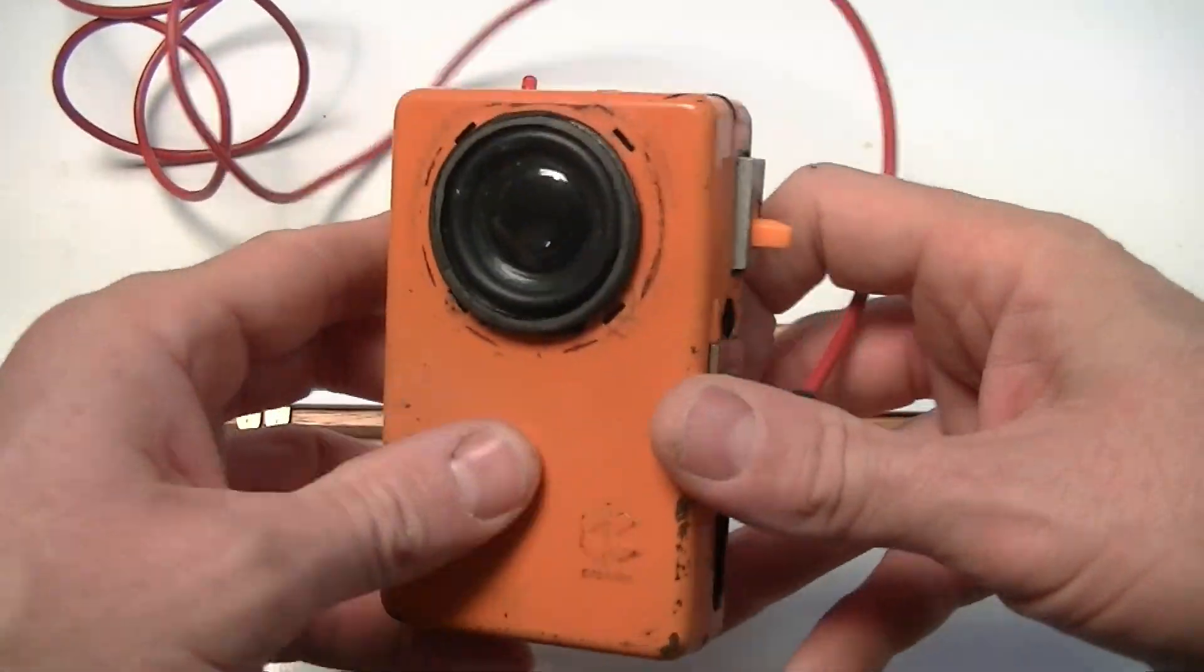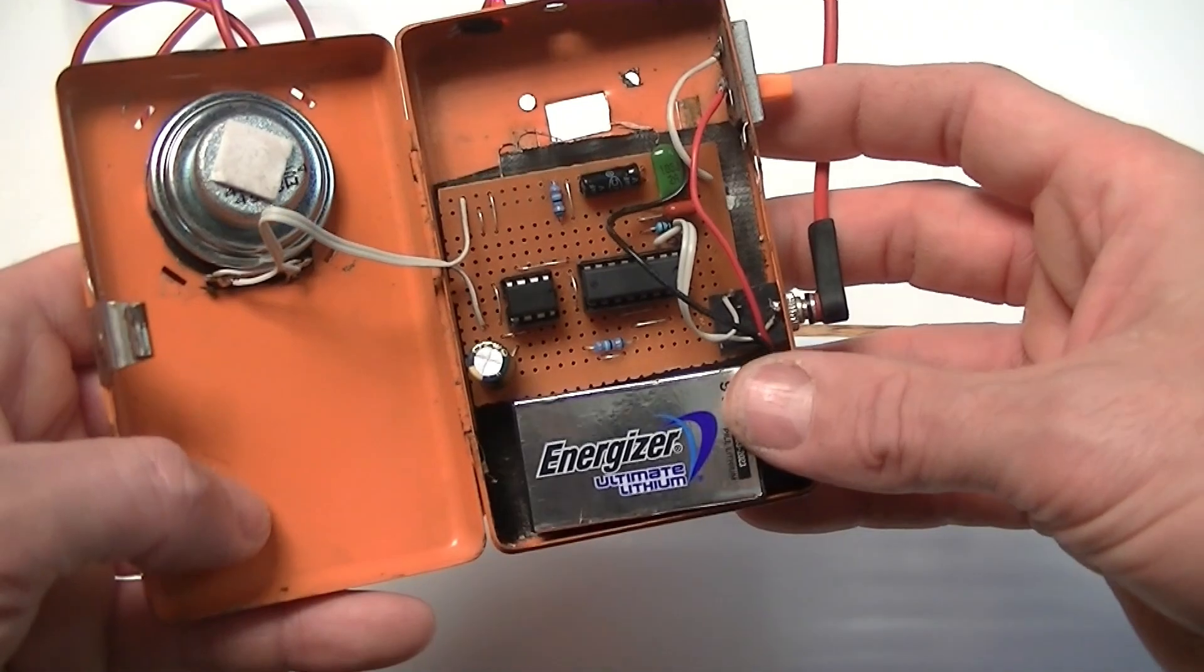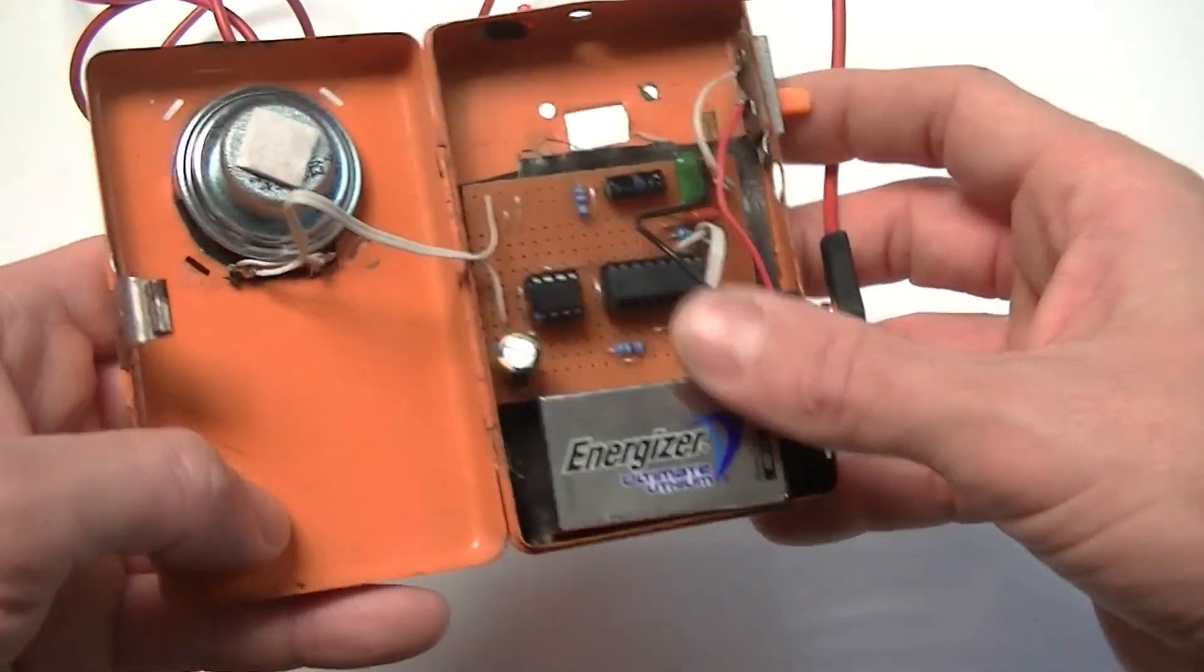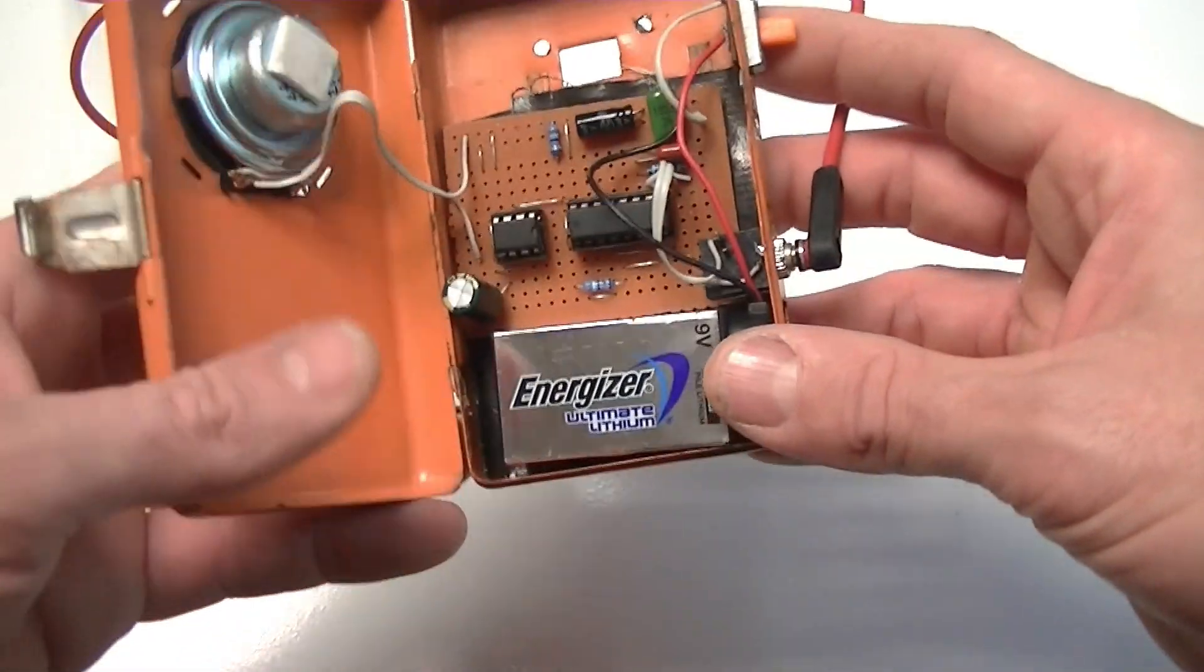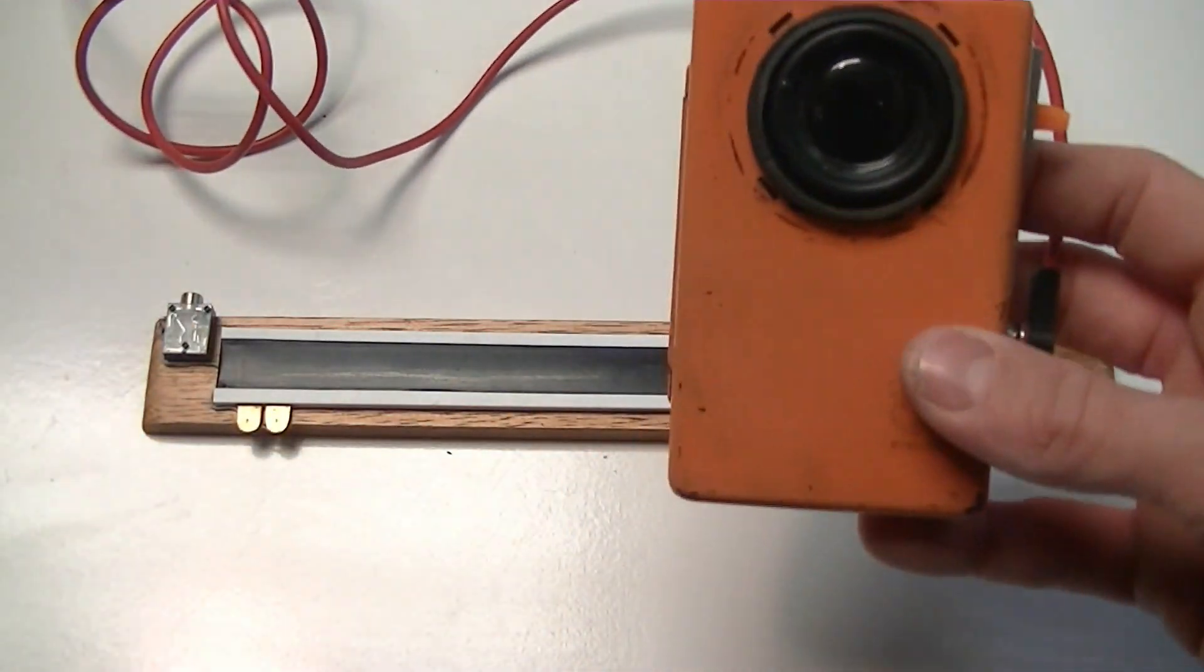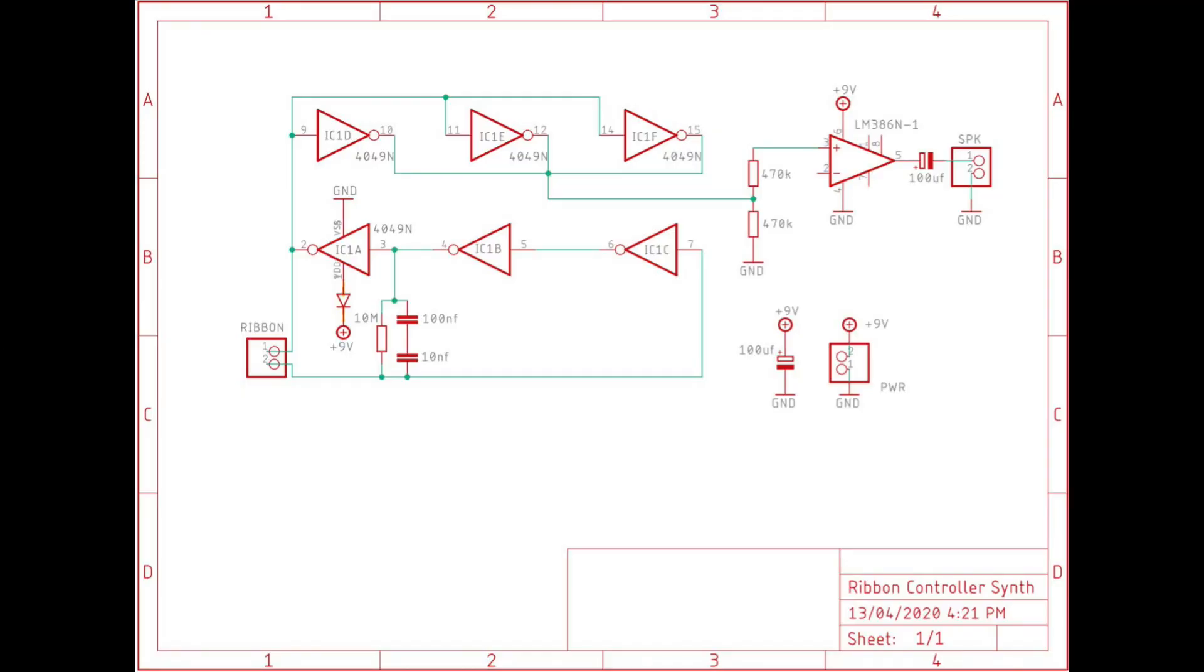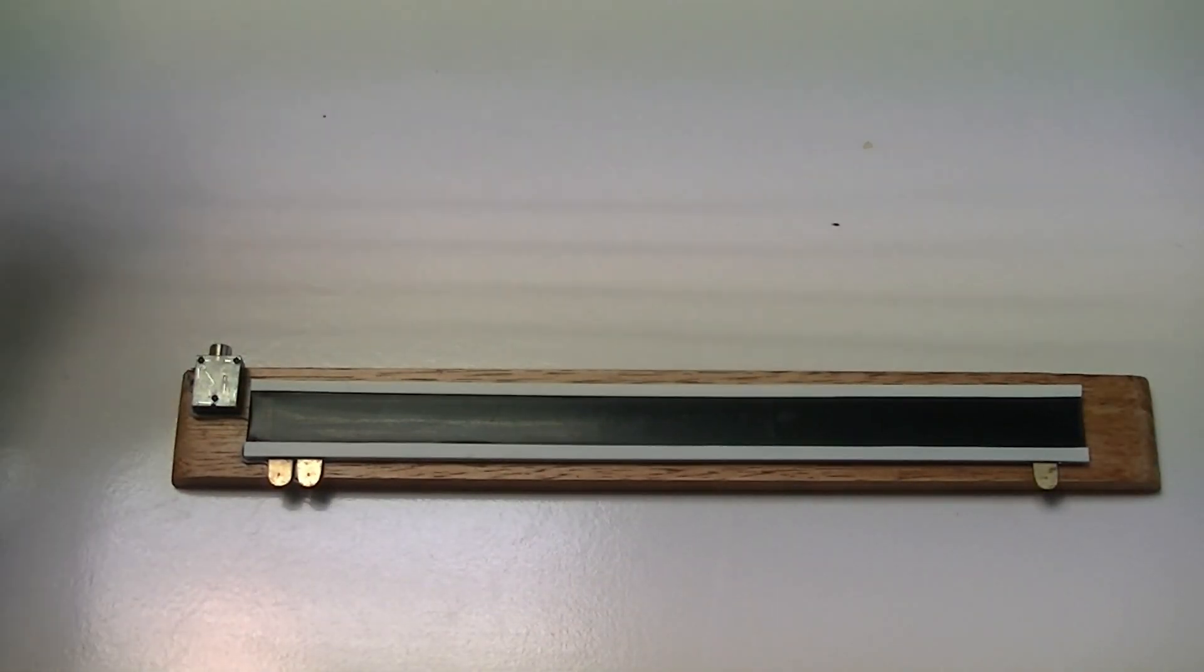To demonstrate it, I made this little synth here. Just have a 4049 CMOS chip, a 386, just to give it a bit of sound. And a pretty simple circuit. I'll put the schematic up now. But it's a great way just to test your ribbon controller once you've made it.